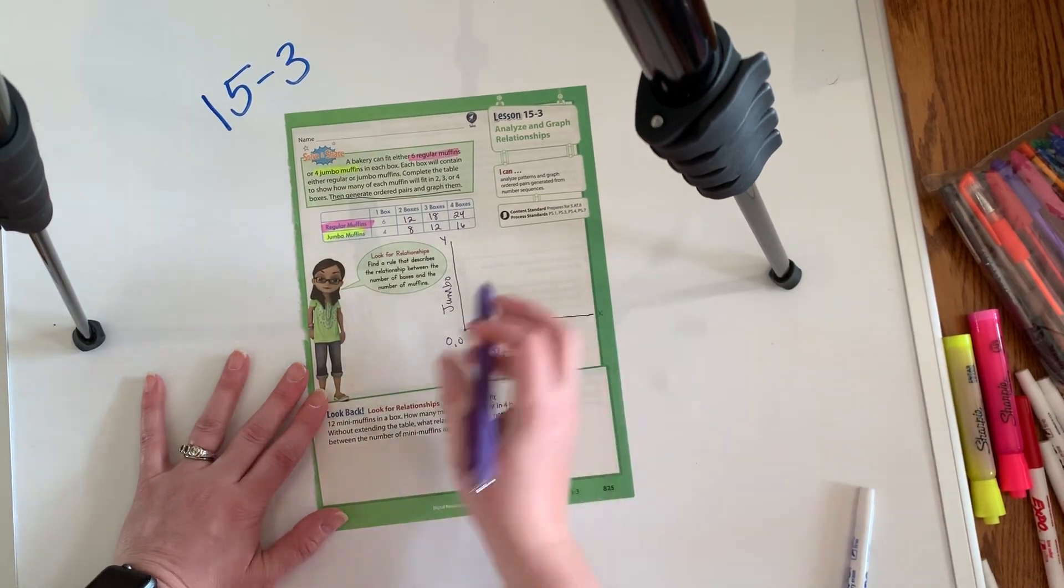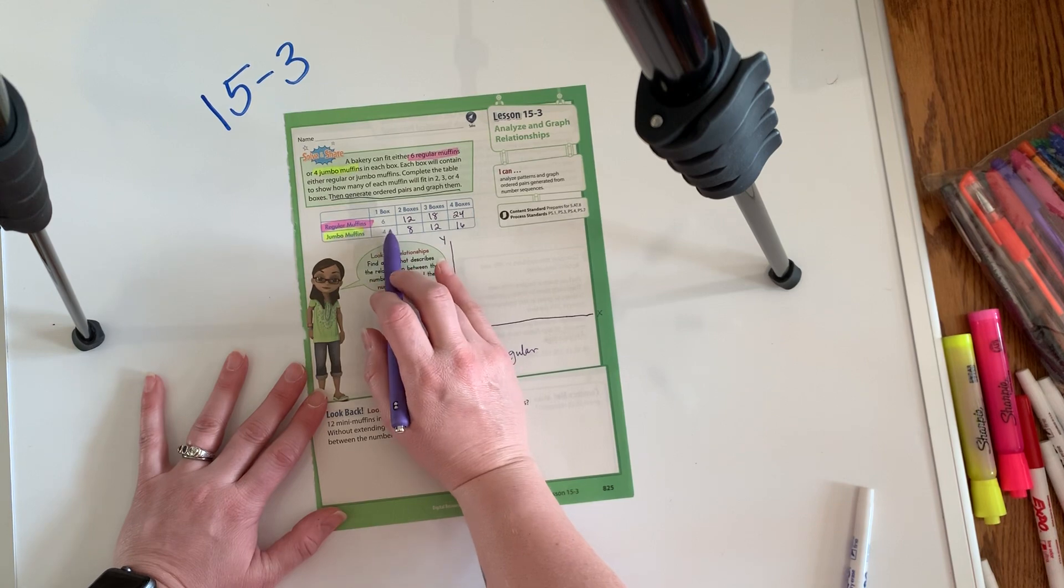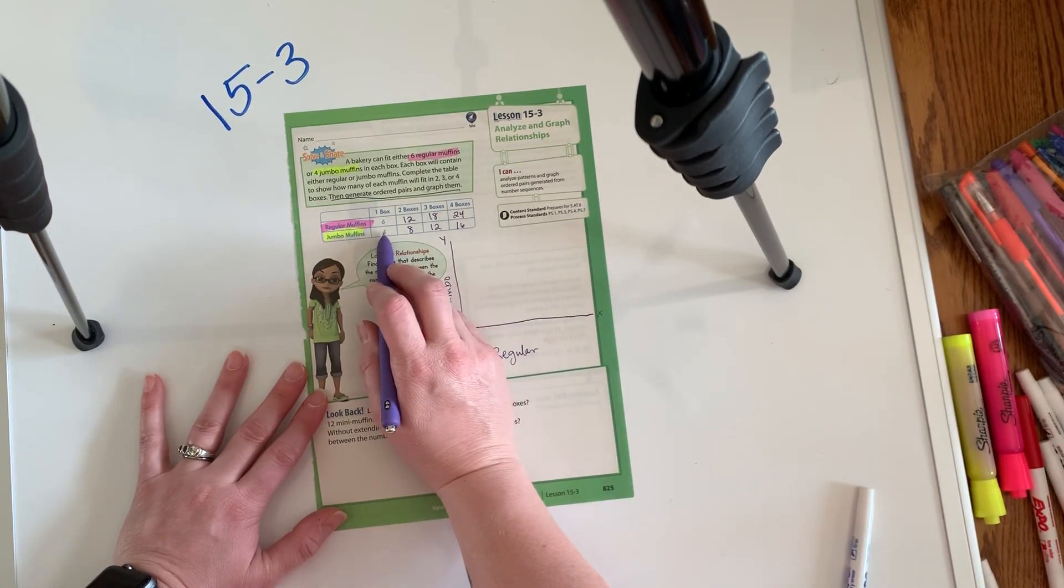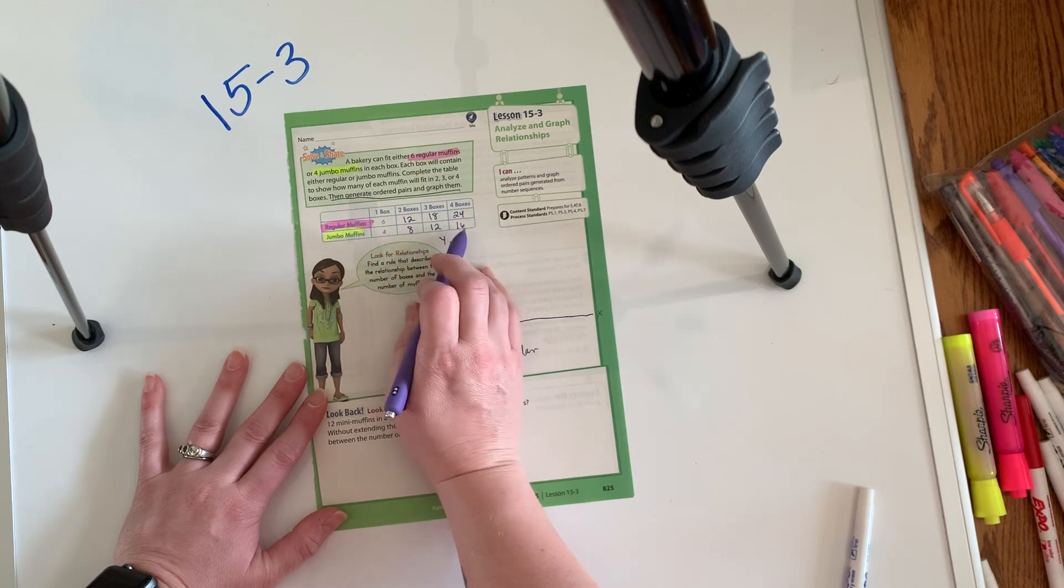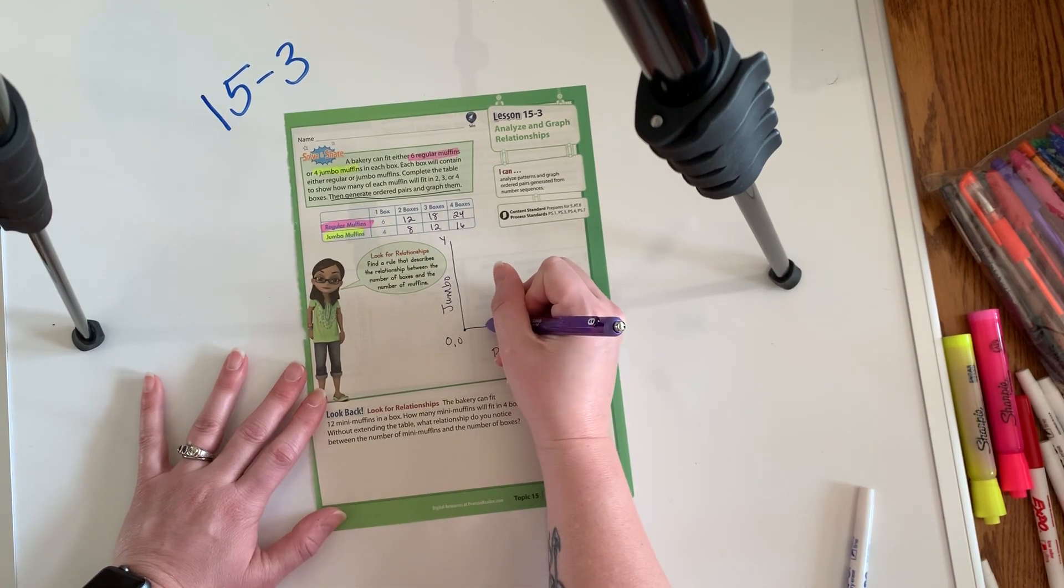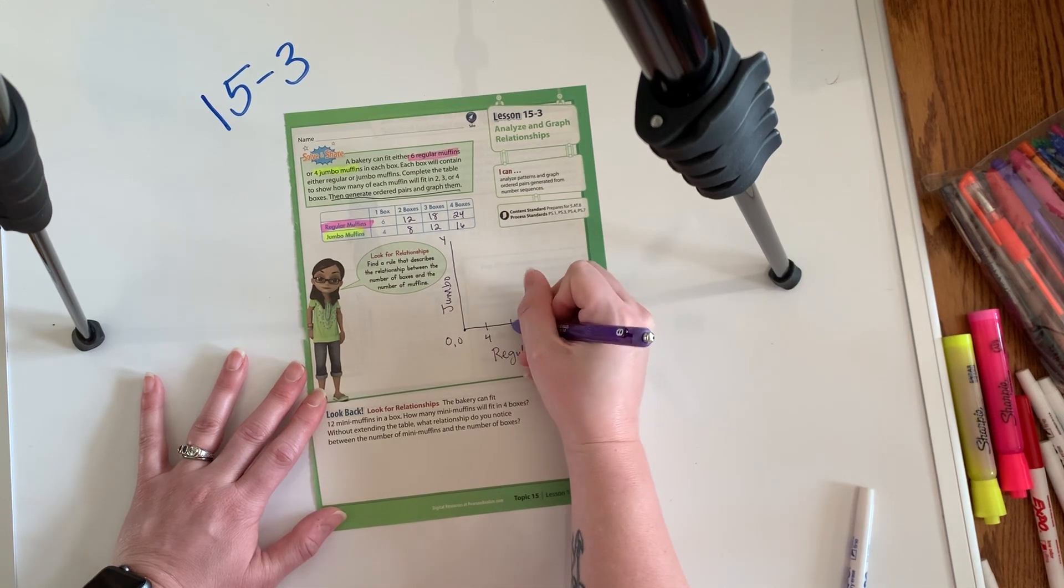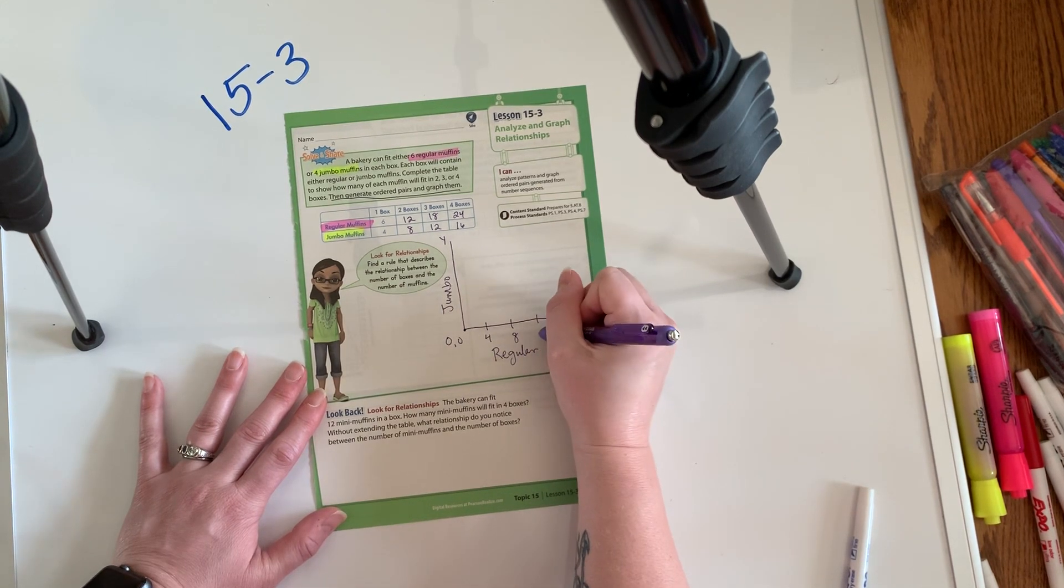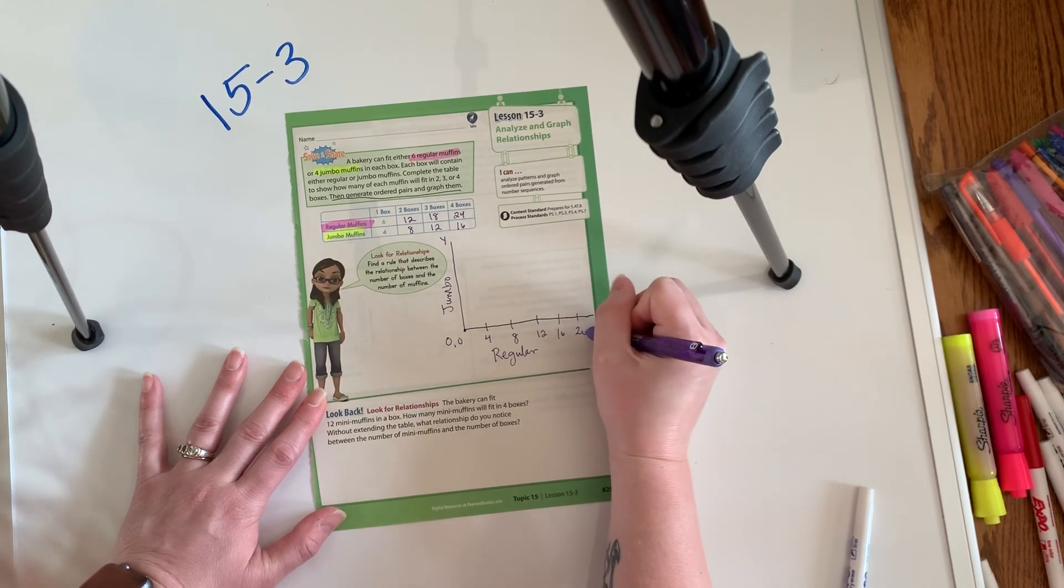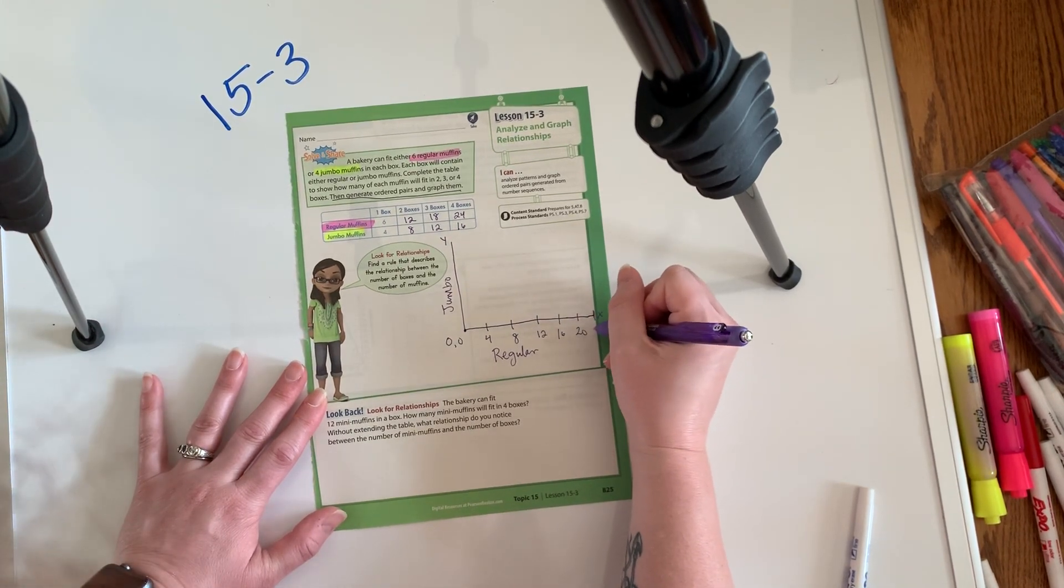And then what I've decided to do is I've decided to divide this up by, I'm going to count by fours because if I count by fours, I will also get the numbers that the sixes need. So this is going to go, this will be four, this will be eight, 12, 16, 20. And then down here we have 24.